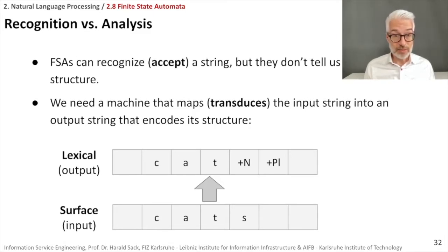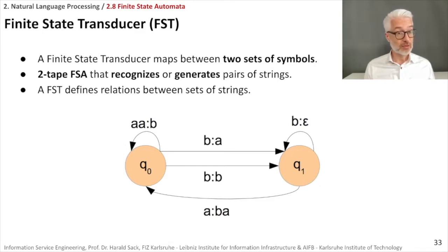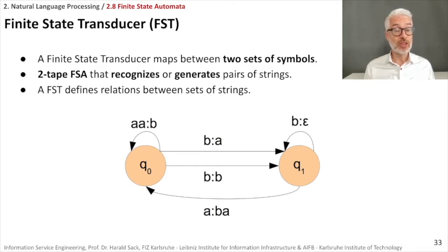We extend the finite state automaton to become a finite state transducer. This is the basic form of a finite state transducer, FST, that maps between two sets of symbols. It's a two-taped finite state automaton that recognizes or generates pairs of strings. An FST defines relations between these kinds of sets of strings.